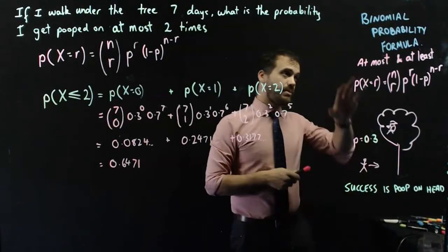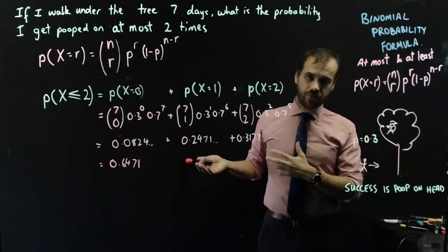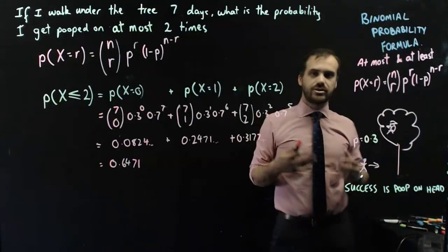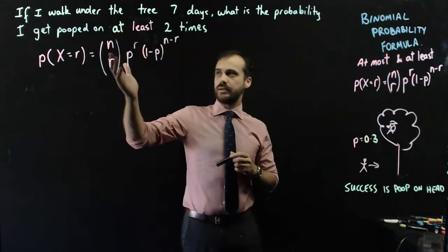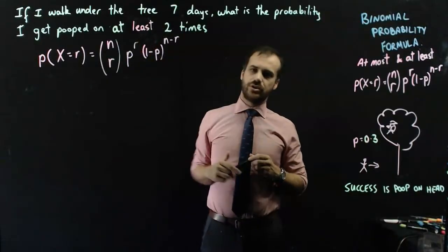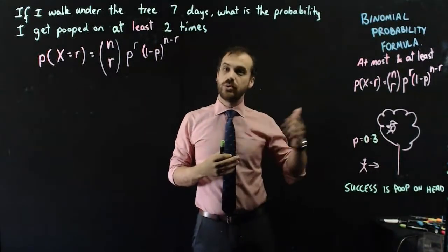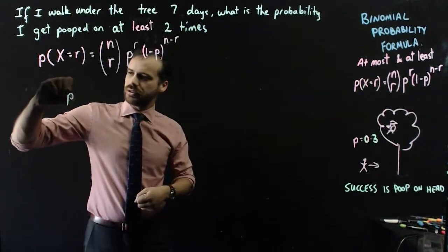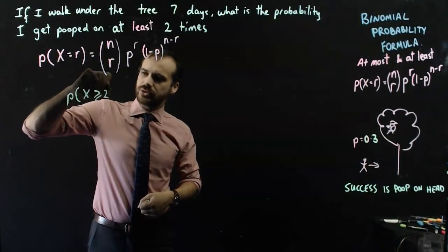That was at most. This video is about at most and at least, so we need one more type of question. I'm going to show you an extra skill when I do that at least question. All right, so the big change here is the probability that I get pooped on at least two times. So what does that mean? Well, at least two means two or more. So we're trying to find the probability that x is greater than or equal to 2.